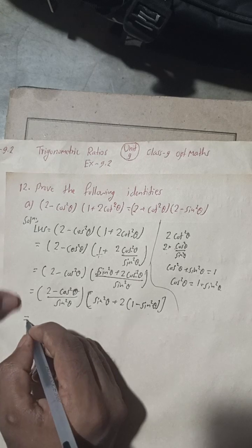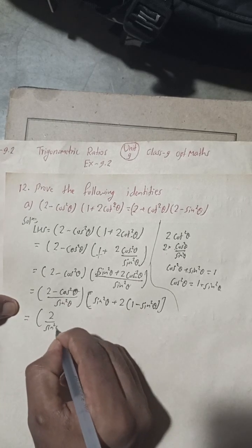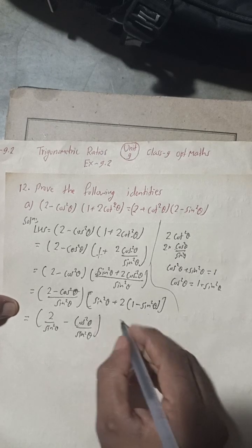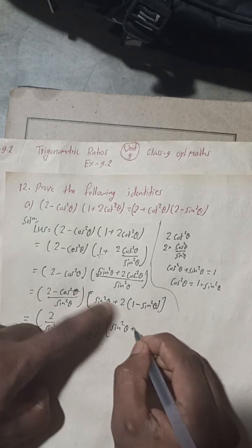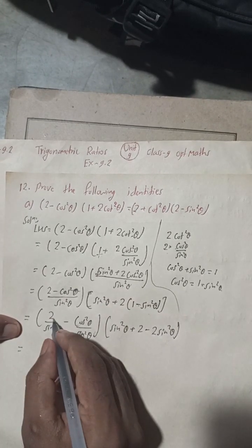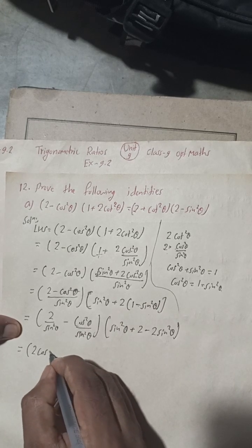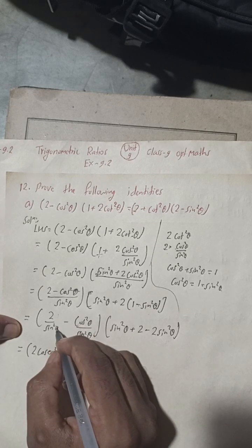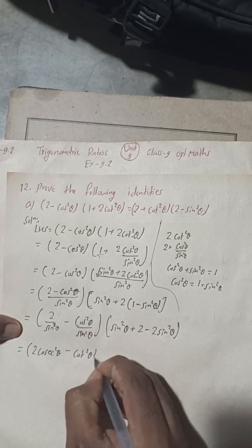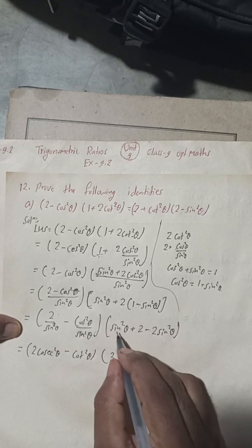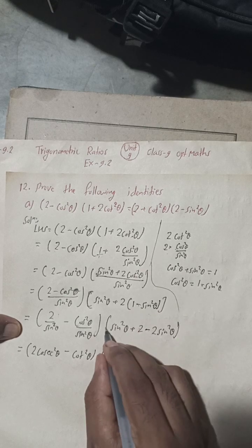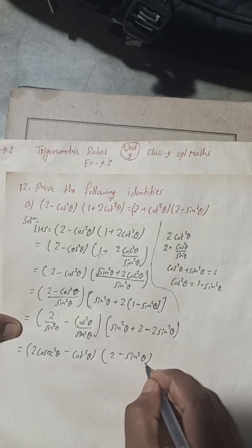Expanding: 2 / sin²θ - cos²θ / sin²θ, then sin²θ + 2(1 - sin²θ) = sin²θ + 2 - 2sin²θ. Now cos²θ / sin²θ is cot²θ, and combining the sin²θ terms: 2sin²θ - sin²θ gives -sin²θ. So we get 2 - sin²θ for this part.